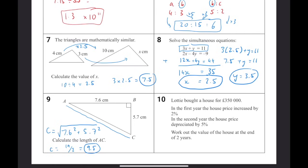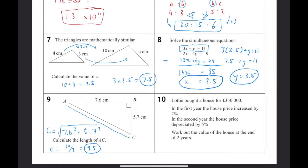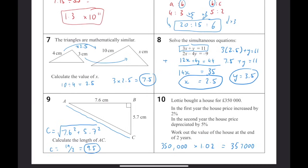And question number 10. Lottie bought a house for 350,000 pounds. In the first year, the house price increased by 2%. In the second year, the house price depreciated by 5%. Work out the value at the end of the two years. So when you've got a calculator to do any form of percentage increase or decrease, you want to use calculations like these. So 350,000 times 1.02 makes 357,000. And then from there, it's a depreciation of 5%. So 357,000, this time, because it's a decrease, we take 5% off of the 1 value. So that leaves us with 339,150 pounds.